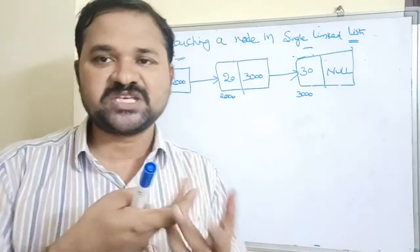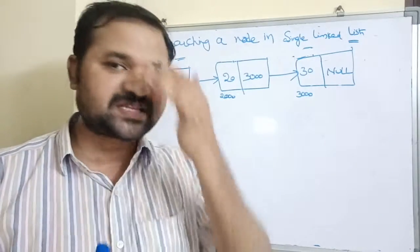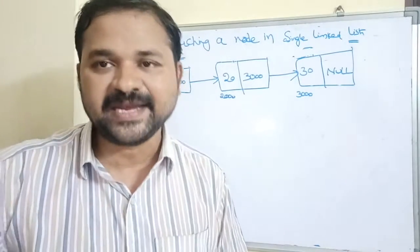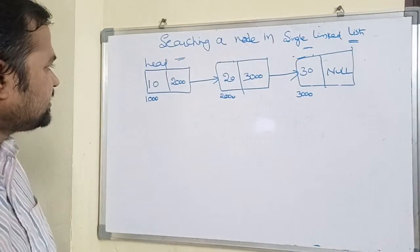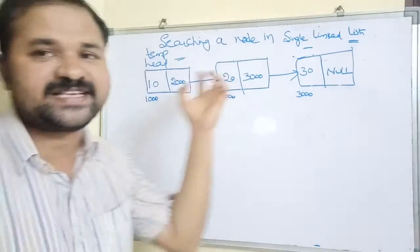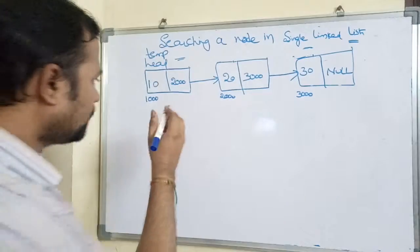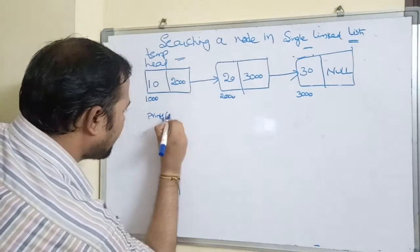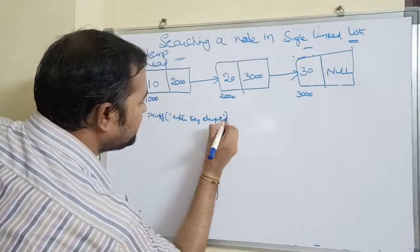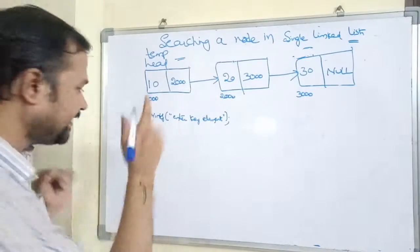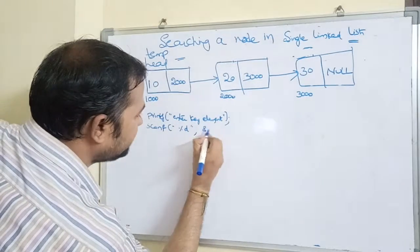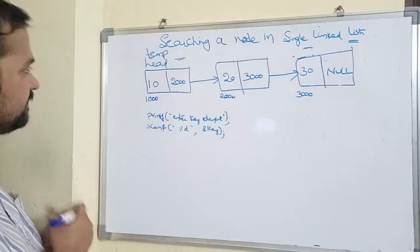Here we follow linear search logic. In linear search, we compare the key element with elements of the list one by one until the key element is found or the list is exhausted. Initially, we place temp at head. We need to read the key value, so we print 'enter key element' and declare an integer variable key, then read it using scanf with format specifier %d.